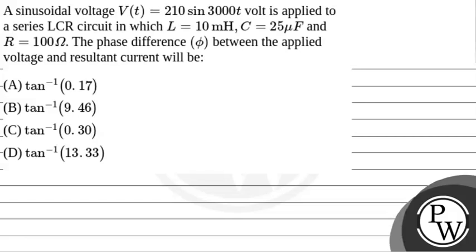The question says that a sinusoidal voltage V(t) equals 210 sin 3000t volts is applied to a series LCR circuit in which L equals 10 mH, C equals 25 microfarad, and R equals 100 ohm. The phase difference phi between the applied voltage and resultant current will be: